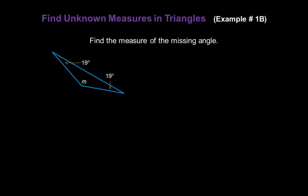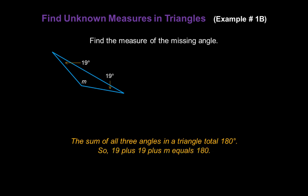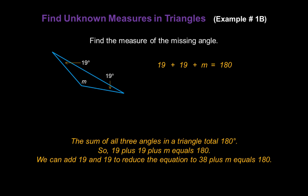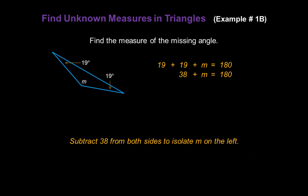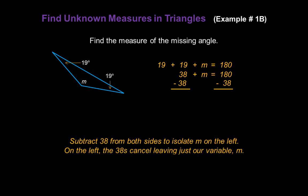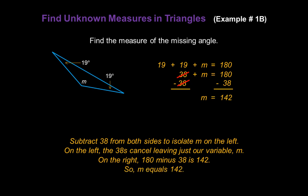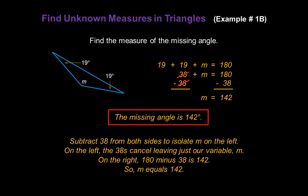Let's work another one. Find the measure of the missing angle m in this triangle. The sum of all three angles have to total 180 degrees, so: 19 plus 19 plus m equals 180. Adding 19 and 19 together reduces our equation to 38 plus m equals 180. Subtract 38 from both sides to isolate m. The 38s cancel, leaving just m, and on the right, 180 minus 38 is 142. So m equals 142, or the missing angle is 142 degrees.